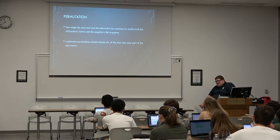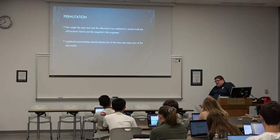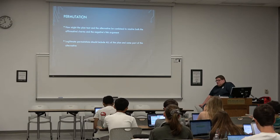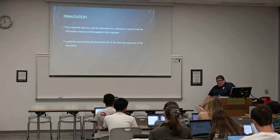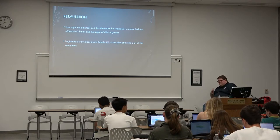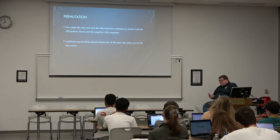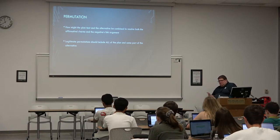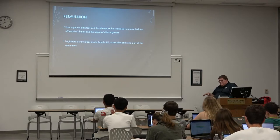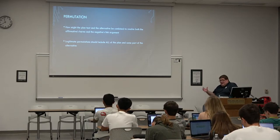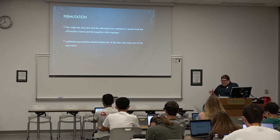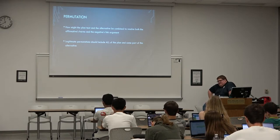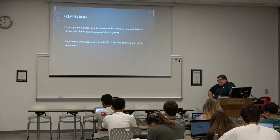Often this is what happens in the 2AC — you hear a criticism and think, okay, how do we run a permutation? A lot of the permutation wants to say that arm sales are a way the United States is trying to securitize against China. Maybe the affirmative can be a move away from that. The permutation could be: do the plan to end arm sales in Taiwan and question those assumptions about why we made those arm sales in the first place. If we don't sell arms to Taiwan, we're not really securitizing against China anymore.